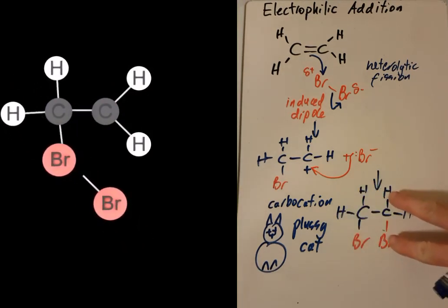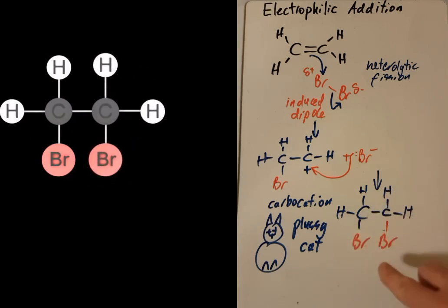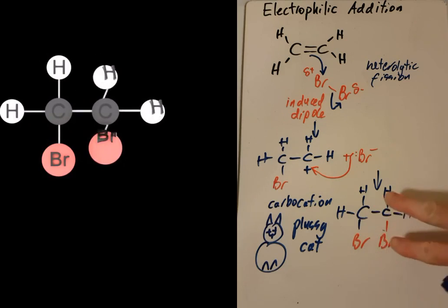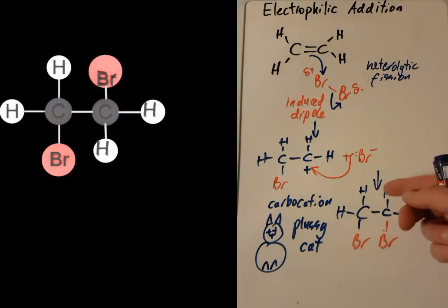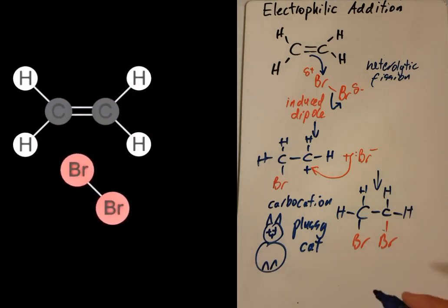Now, in the animation, this bromine flipped up to the top because these big bromine atoms are more stable in the molecule if one's at the bottom and one's flipped up to the top. But that's probably beyond the scope of this video. That's to do with Newman projections.